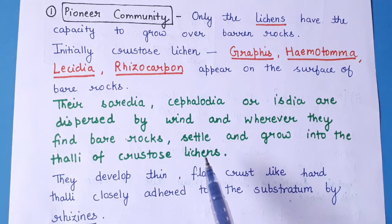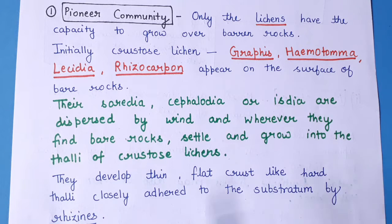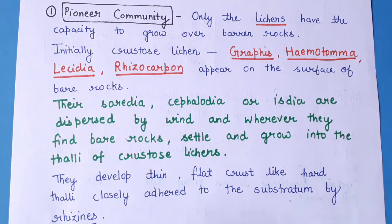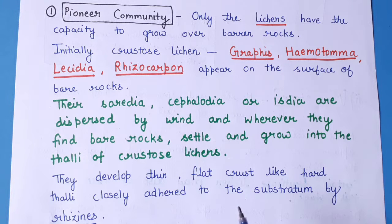The crustose lichens develop thin, flat, and crust-like hard thalli that are closely adhered to the substratum by means of rhizines. They have a crust-like appearance, are flat in nature, and only their fruiting body is visible as they are very closely adhered to the substratum.